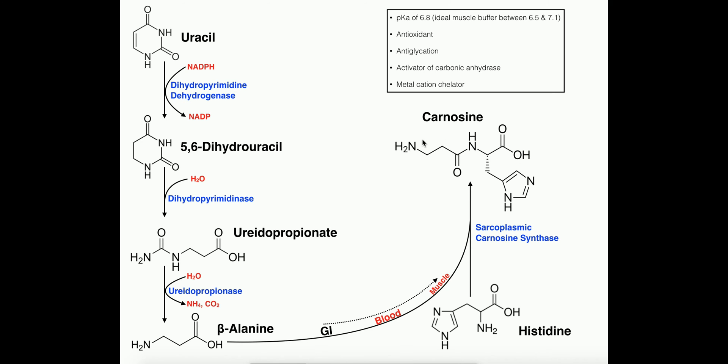In carnosine, particularly this amine on the beta-alanine component over here, this amine can pick up reactive aldehydes - either from glucose in the blood or inside the muscle cell. This amine can pick up formaldehyde, the most reactive aldehyde, and acetaldehyde, a byproduct of alcohol metabolism.